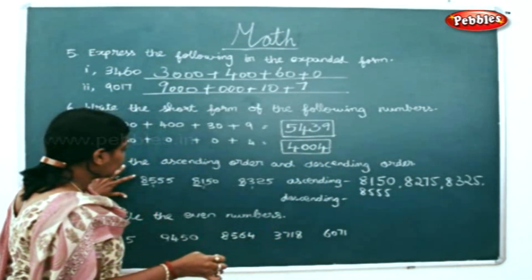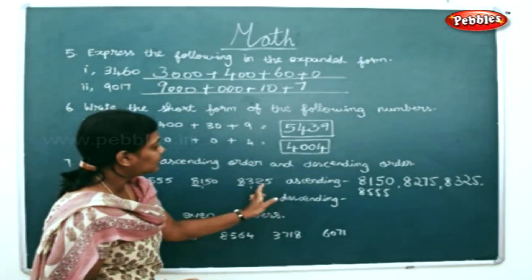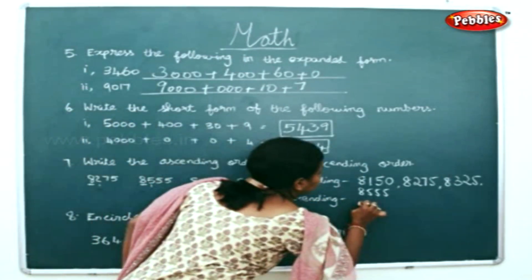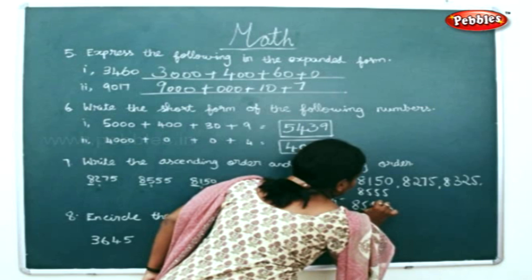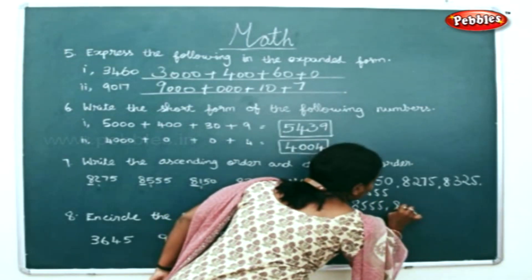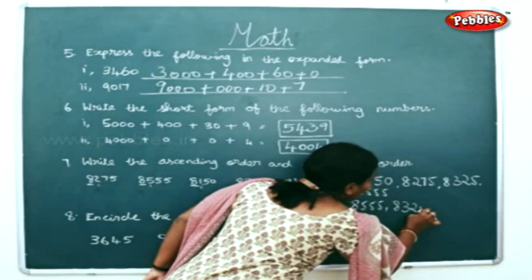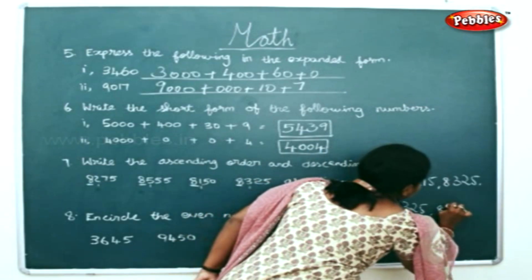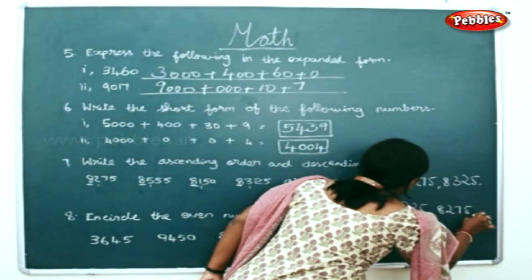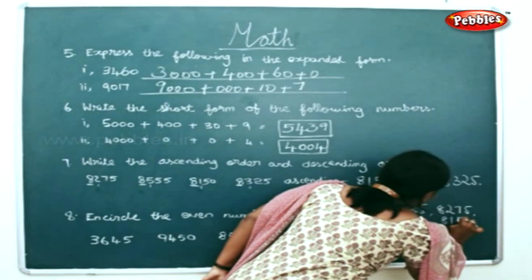For a given set of numbers, the descending order will be the reverse of ascending order: 8555, 8325, 8275, and 8150.